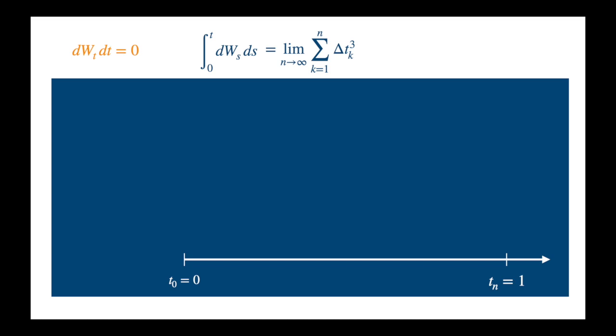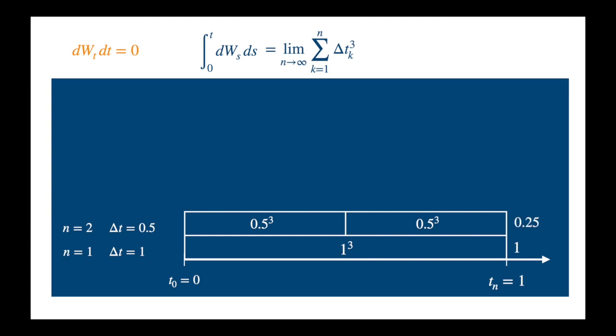Let's say we start with n equal to 1. As there is only one interval, the length of the interval from 0 to 1 is obviously 1. Delta t to the power 3 means we take the cube of 1, which gives 1. Now let's increase n to 2. So the length of each sub-interval is now 0.5, and we have two of them. If we calculate the cube of delta t and sum across the intervals, we get 0.25. So the sum of delta t to the power 3 has declined from 1 to 0.25, as we doubled n from 1 to 2.